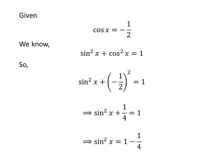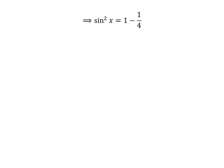Shifting 1 upon 4 to the right-hand side of the equation gives us square of sine of x is equal to 1 minus 1 upon 4. Further arithmetic gives us square of sine of x is equal to 4 minus 1 upon 4, which simplifies to square of sine of x is equal to 3 upon 4.